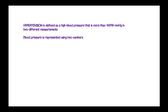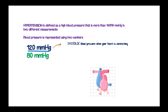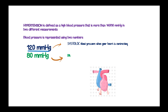Blood pressure is represented using two numbers, like 120 mmHg over 80 mmHg. The 120 represents the systolic blood pressure that occurs when your heart is contracting, and 80 represents the diastolic blood pressure when the heart relaxes.